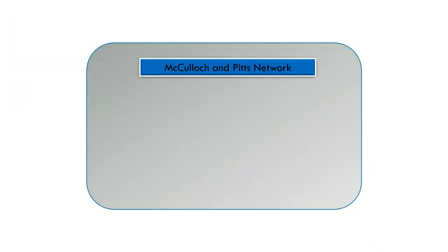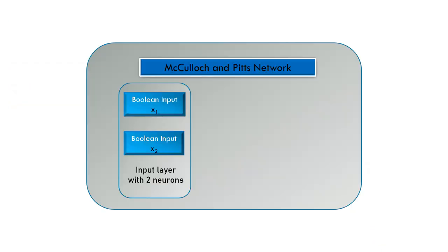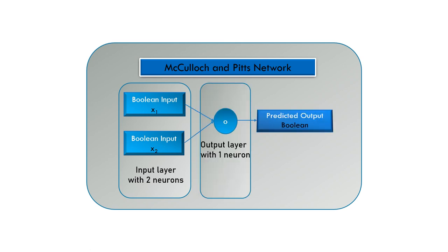In its simplest form, the MCP neuron has Boolean input and a Boolean output and there are only two layers, namely the input layer and the output layer.